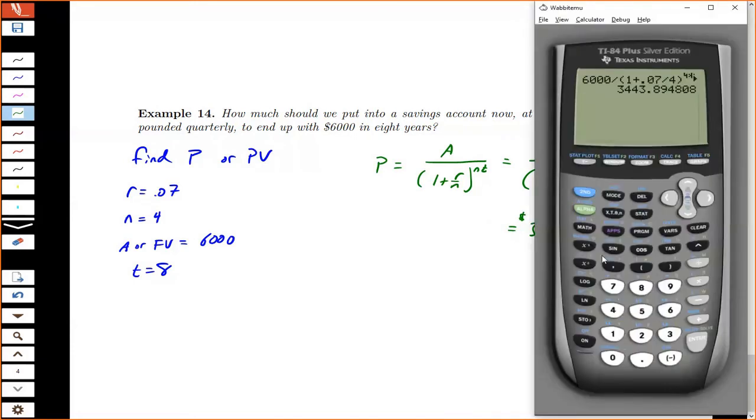And we could have also used our calculator app. So the capital N is going to be 4 times 8. The interest rate is 7%. We don't know how much we're starting with, so I can leave that blank for now. I want to end up with 6,000, and the P over Y stands for payments per year, C over Y's compounds per year. I'm going to change that to 4, and go back up. It's the present value I want to solve for. So I hit alpha and hit solve, and that gives me the number I wanted, $3,443.89.